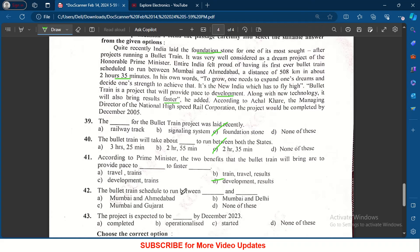The bullet train is scheduled to run between dash and dash - between Mumbai and Ahmedabad. The project is expected to be dash by December 2023 - it is completed by 2005 itself, so none of these is the answer.